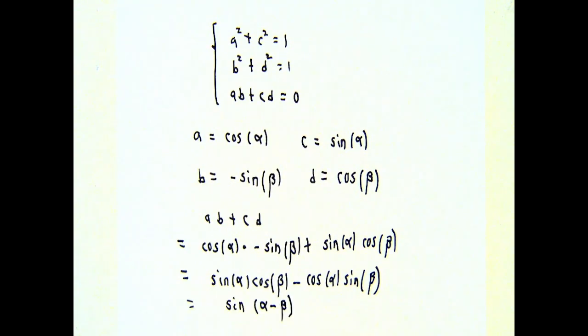There's a trig identity for that. That's sine of alpha minus beta. I want that to be zero. Now, the sine function is zero whenever you feed in a whole number times pi radians. So, there are many ways that I could do that. The easiest one of which, though, is to make alpha and beta the same number. Alpha minus beta is zero times pi, zero. The sine of zero is zero, and that'll make the third equation happy.